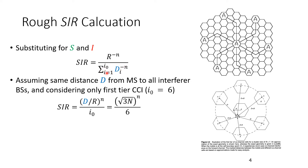We assume all interference sources are at the same distance D from the mobile station, considering only the first tier of interferers since further tiers have much less power due to distance. With six first-tier interferers, the denominator becomes 6 times D raised to minus n. Rearranging, SIR equals (D/R)^n divided by 6, which equals Q^n over 6. For hexagonal cells Q equals the square root of 3N. This equation applies with the assumptions of equal distance and equal transmit power across all base stations.